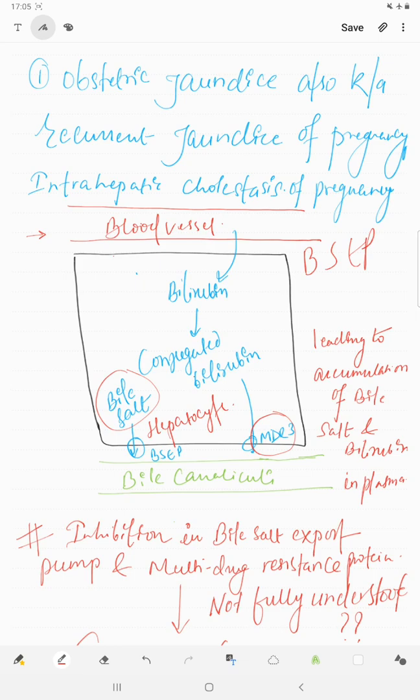So after knowing this, we can define obstetric jaundice as a jaundice leading to accumulation of bile salt and bilirubin in plasma.